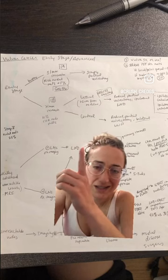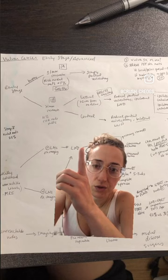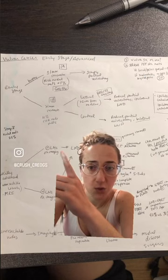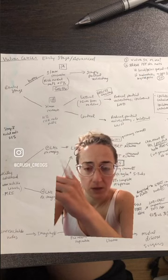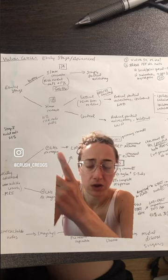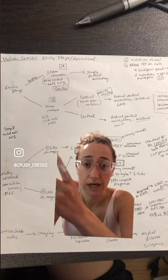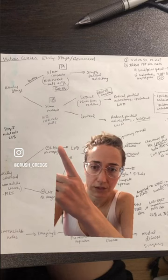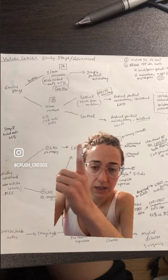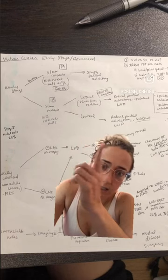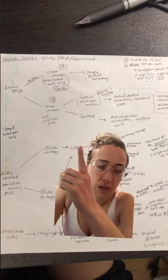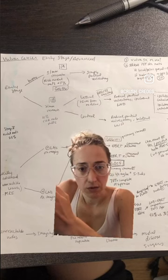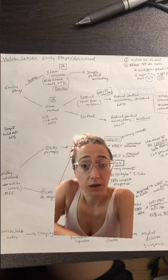It makes sense that you would do a partial vulvectomy in this case, as opposed to stage 1B, which is greater than one millimeter of invasion or greater than two centimeter lesion, which has a 10% risk of nodal mets. You can see in that NCCN algorithm it points to a radical vulvectomy with a lymph node dissection.